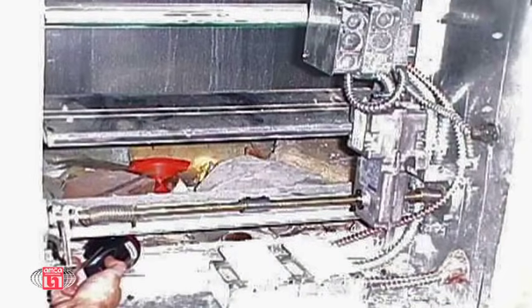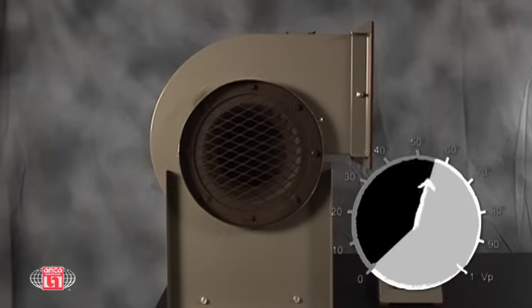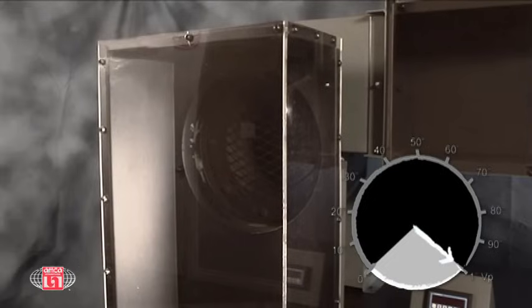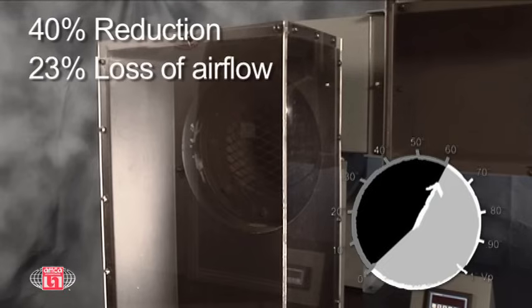Let's assume we use an open inlet as a benchmark, with the inlet velocity set to 1 inch of water velocity pressure. If we affix a poorly designed right angle inlet box directly to the inlet side of the fan, our velocity pressure is reduced to just 6 tenths of an inch water, a 40% reduction, which equates to a 23% loss of air flow.